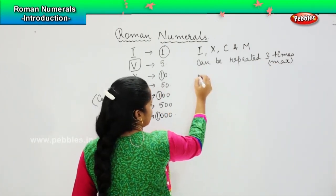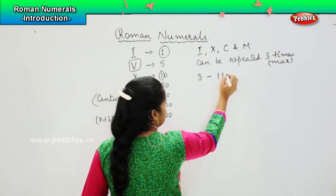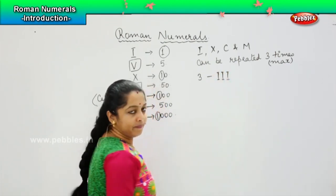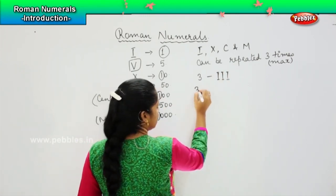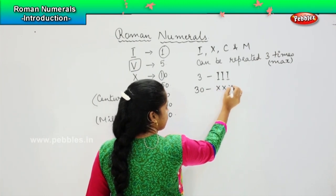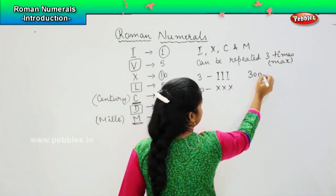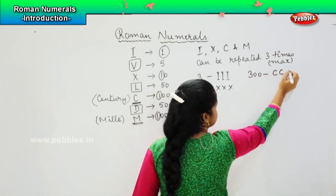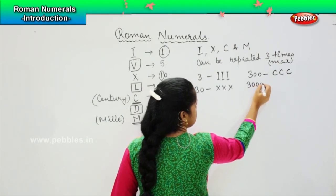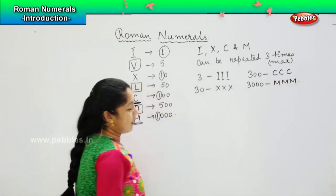For example, if I want to write 3, I can write three times I. If I want to write 30, I can write three times X. If I want to write 3000, I can write three times M.